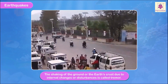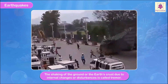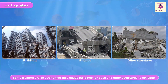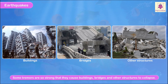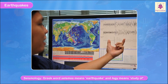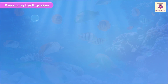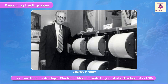Earthquakes: The shaking of the ground or the earth's crust due to internal changes or disturbances is called a tremor. Some tremors are so strong that they cause buildings, bridges, and other structures to collapse. The scientific study of earthquakes is called seismology — a Greek word where 'seismos' means earthquake and 'logi' means study. The Richter scale is used to measure the intensity of earthquakes.